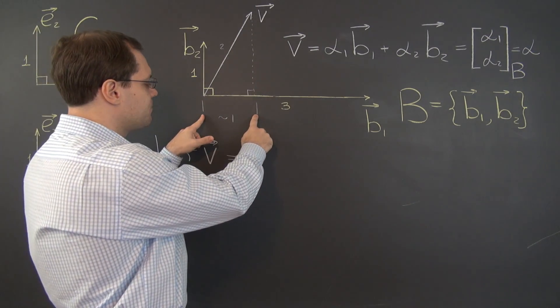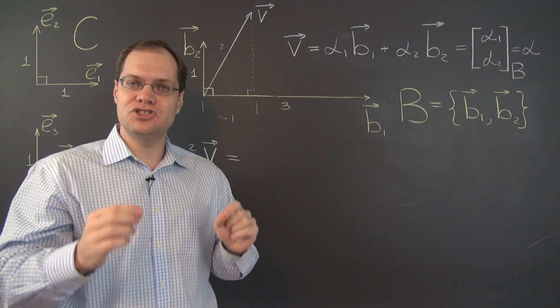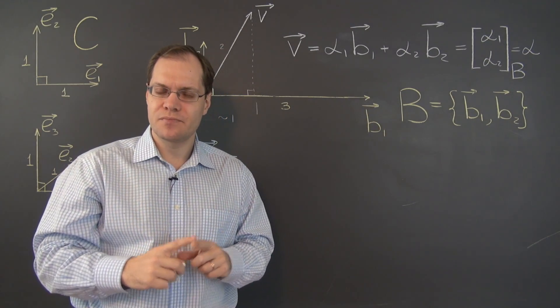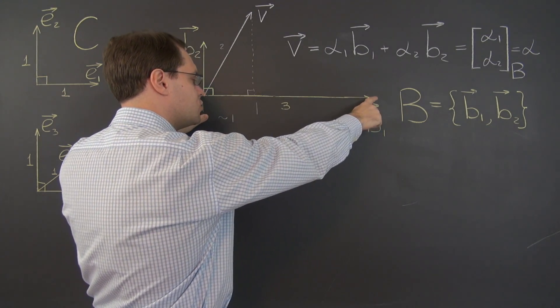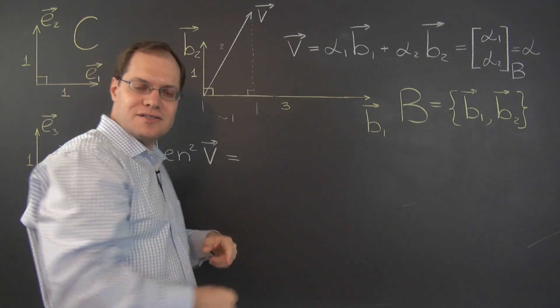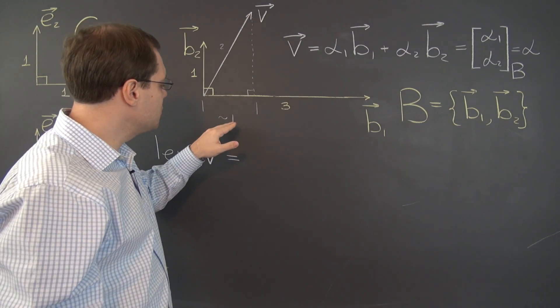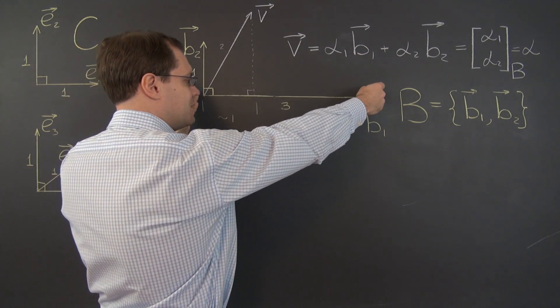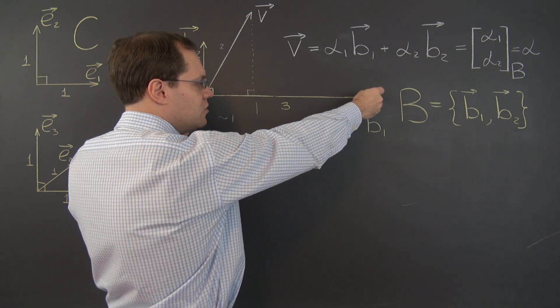Before, the length of this segment was actually alpha 1, but that hinged on the fact that the basis element we were using was length 1. But now the length of this vector is 3, so it's important to realize this segment is no longer alpha 1, because if alpha 1 were approximately 1, then we would multiply alpha 1 by b1 and get a segment that's 3 units long.